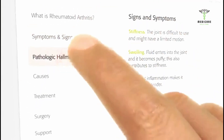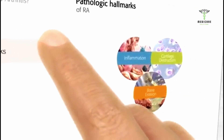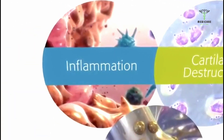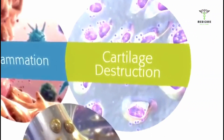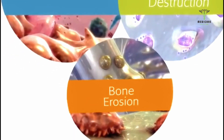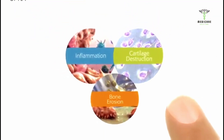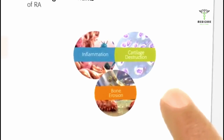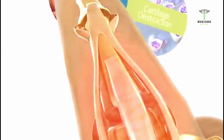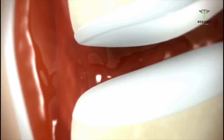The pathologic hallmarks of rheumatoid arthritis include inflammation of the joints, particularly the small joints in the hands, wrists, and feet, accompanied by cartilage destruction and bone erosion. Underlying inflammation leads to many of the characteristic signs and symptoms of RA, such as pain and swelling of the joints.